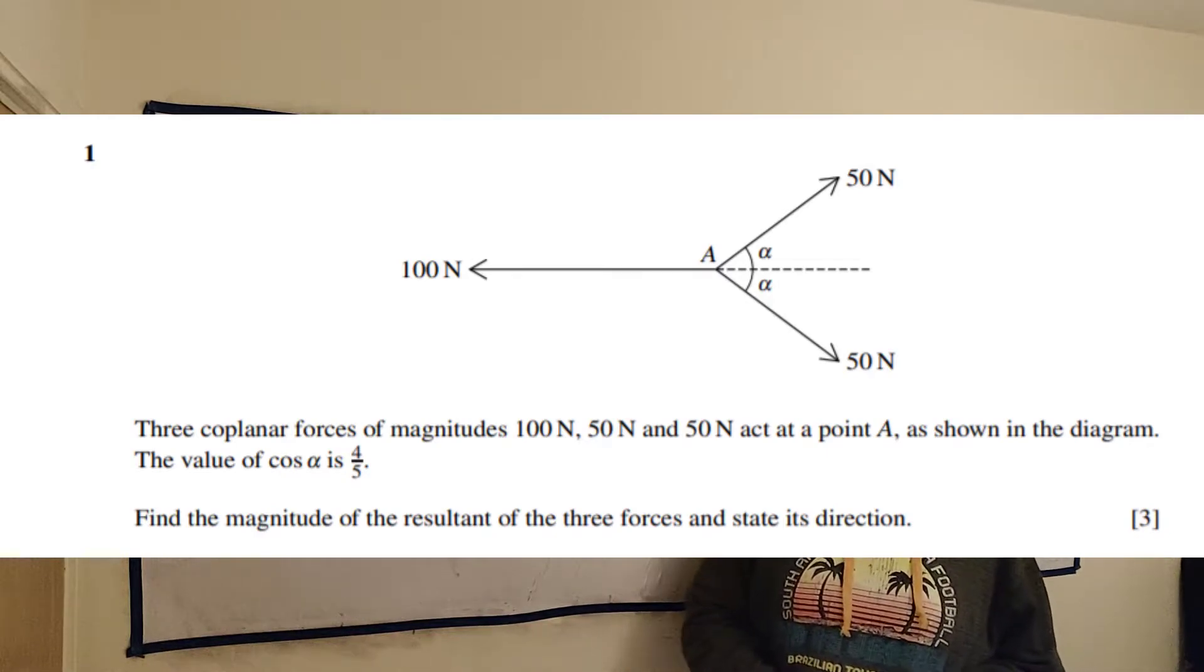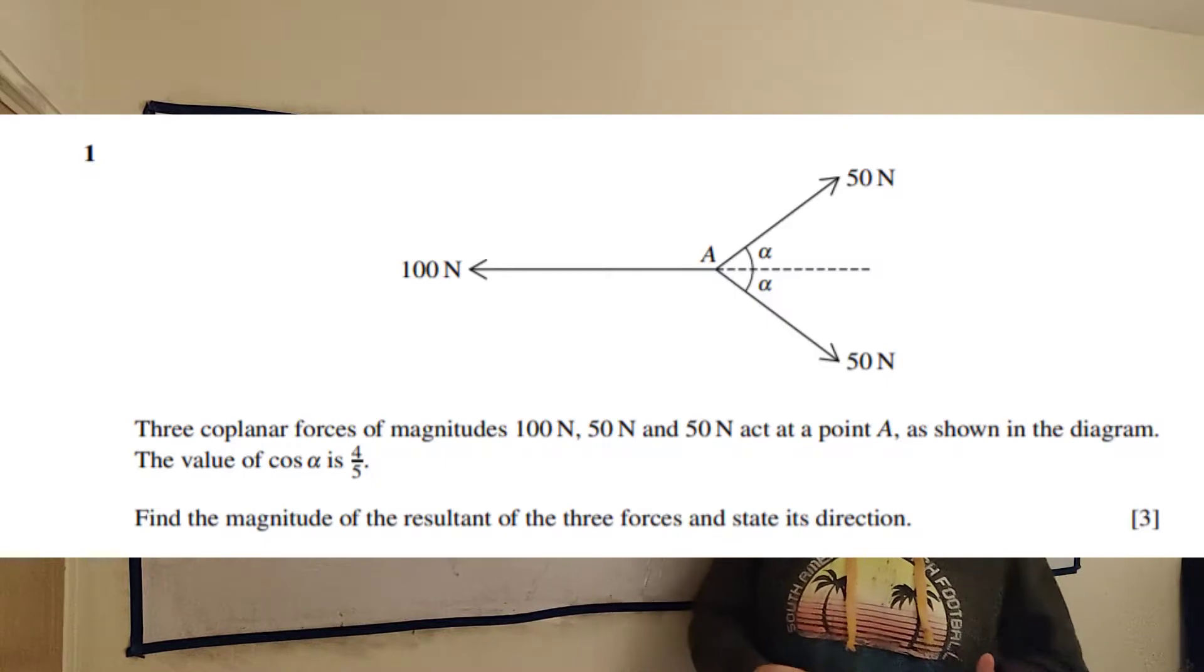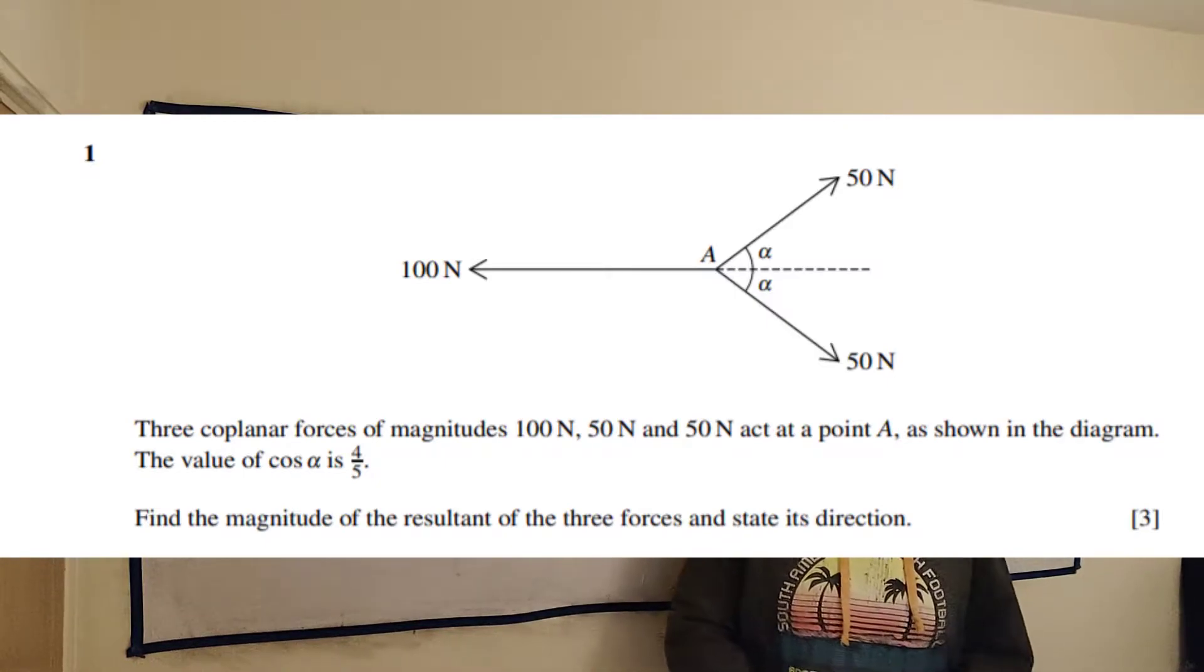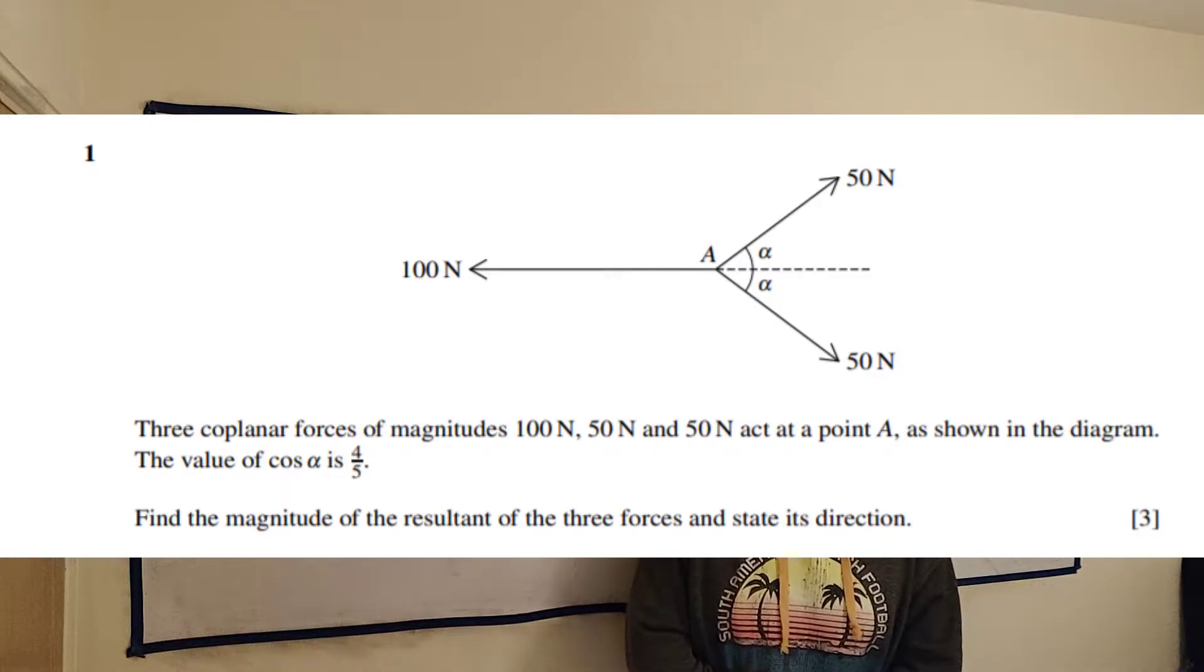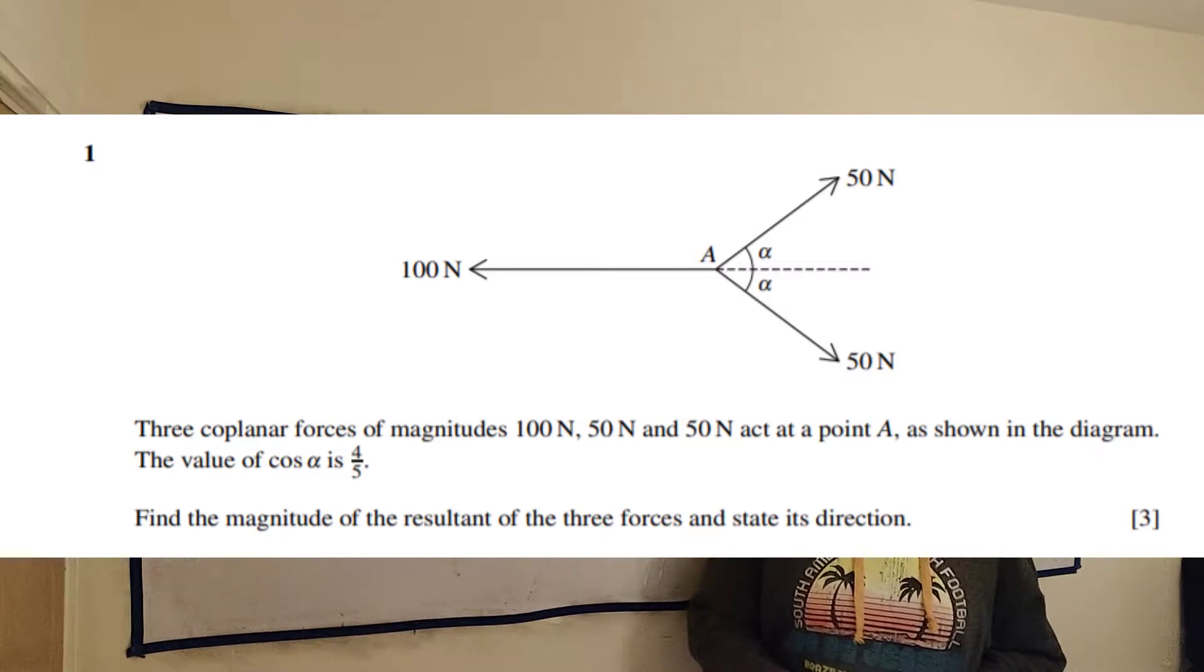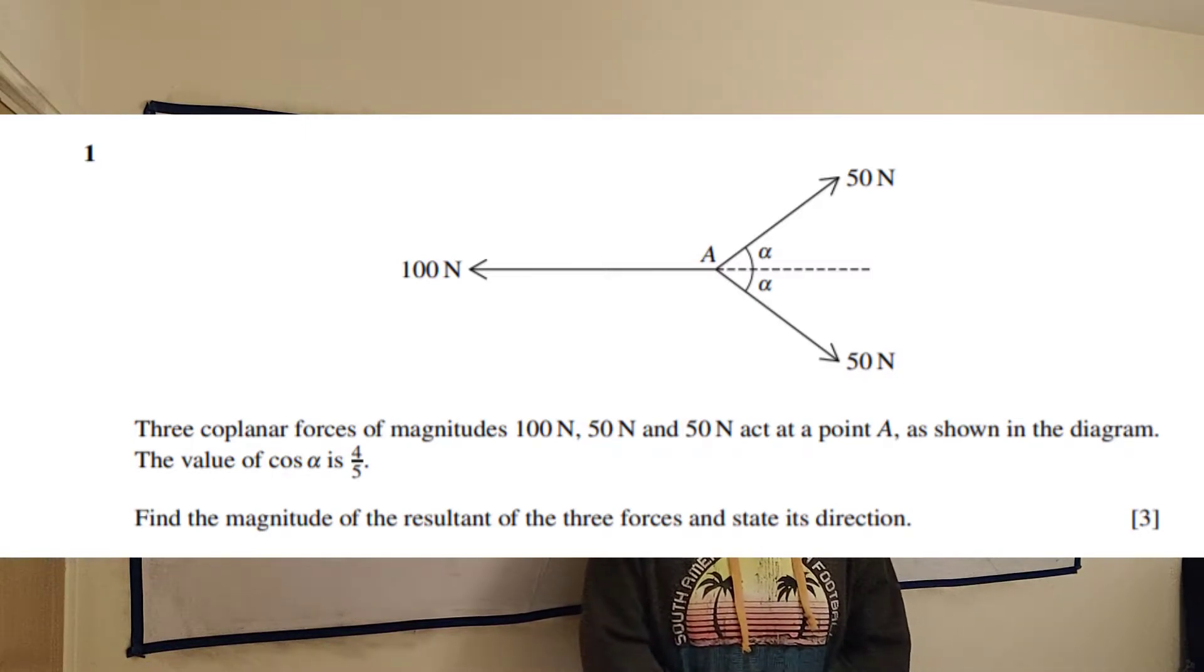This is question 1 from paper 4-1 from the June 2020 exams from Cambridge International. This is the mechanics paper. Up the top right of this screen you'll find a card that will bring you to the playlist that has all my solutions to the questions in this paper. And below the video you can find a link to an image of this question so you can try it before looking at my solution.